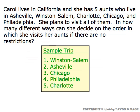Carol lives in California. She has five aunts who live in Asheville, Winston-Salem, Charlotte, Chicago, and Philadelphia. She plans to visit all of them. In how many ways can she decide on the order in which she visits her aunts? First off, with no restrictions.